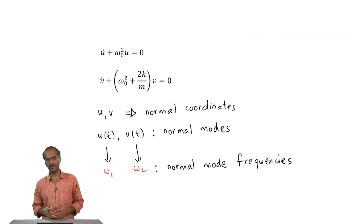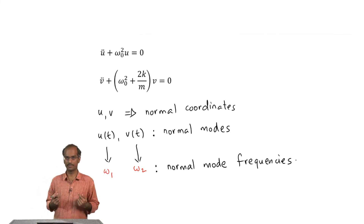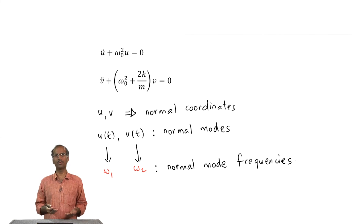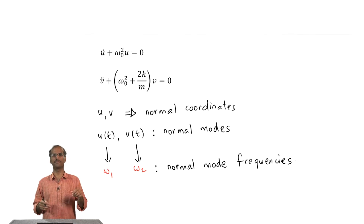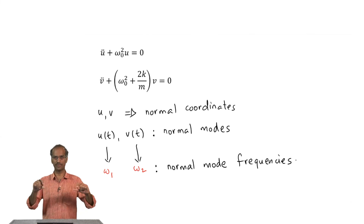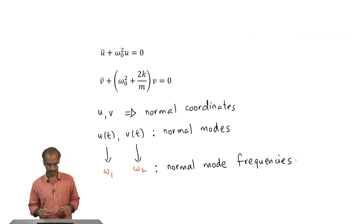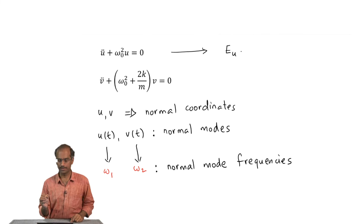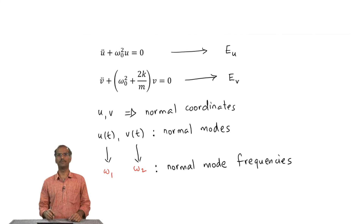There are two frequencies, one associated with the u mode and the other with the v mode. The two frequencies omega_1 and omega_2 corresponding to the u and v modes are called normal frequencies or normal mode frequencies. These frequencies are clearly different from the frequency of the one-dimensional oscillator. In this case, the u mode corresponds to the frequency of one individual pendulum, and the second mode takes into account the presence of the spring between the two pendula.